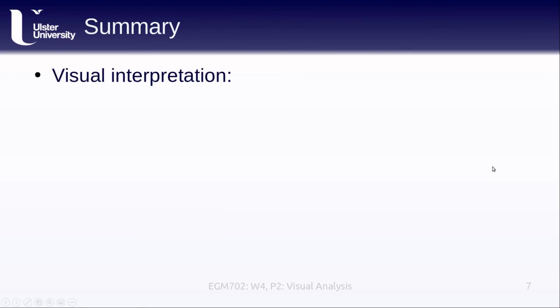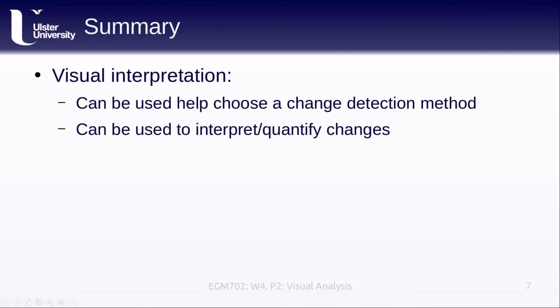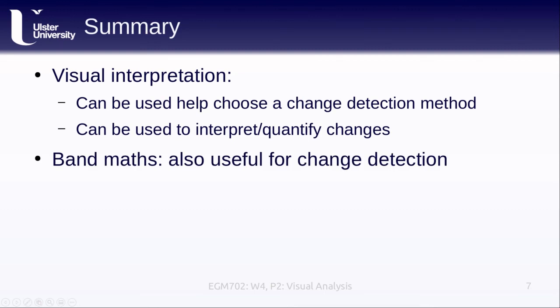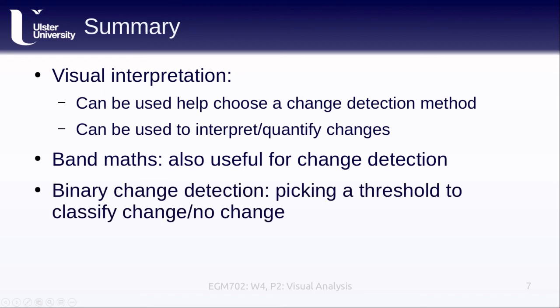So to sum all of this up, visual interpretation can be used to help us choose a change detection method. It might help us see some of the more obvious changes that help point us in the direction of which detection method can help us to pick out some of the less obvious changes. We can also use this to help interpret or quantify changes directly. This is especially true when we have very obvious differences between our images. If we're using band math, these are also useful for change detection, much as they are useful for helping us to identify objects in a single image. And binary change detection is where we're actually picking a threshold in order to classify an image into change and no change pixels.